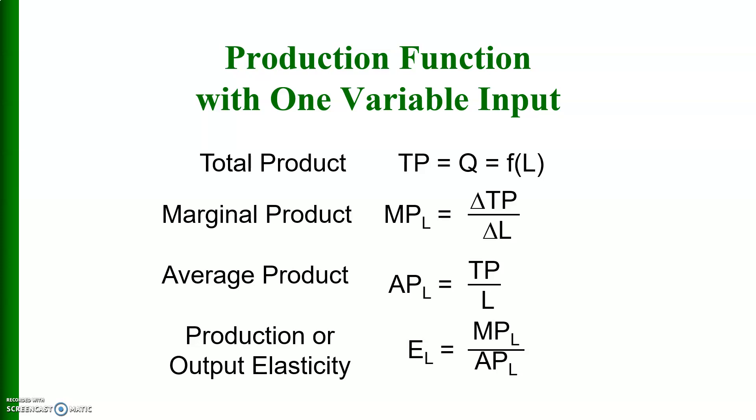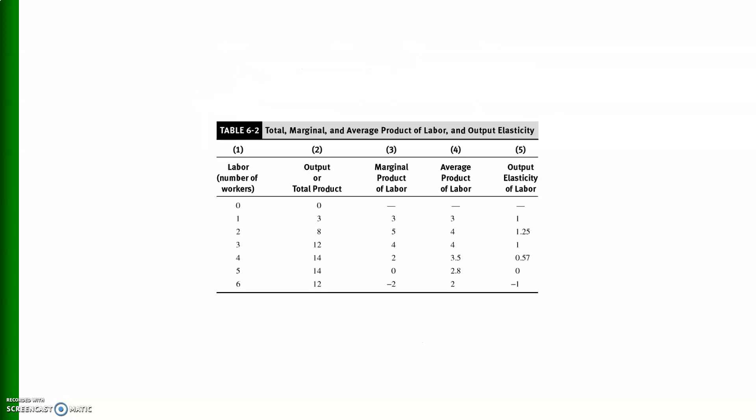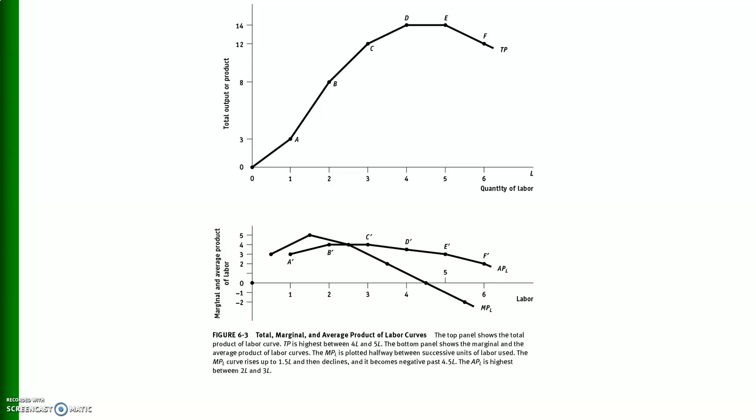In this table we have calculated the total output, marginal product of labor, average product of labor, and output elasticity of labor, which is defined as MPL divided by APL. This is the graphical representation of that table.